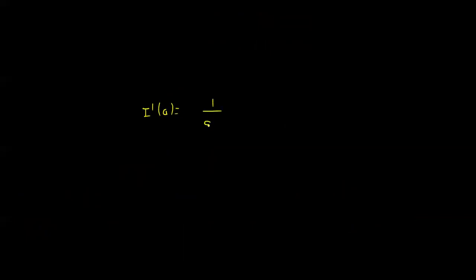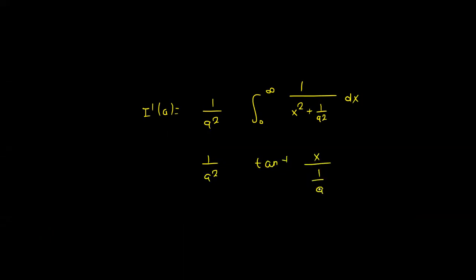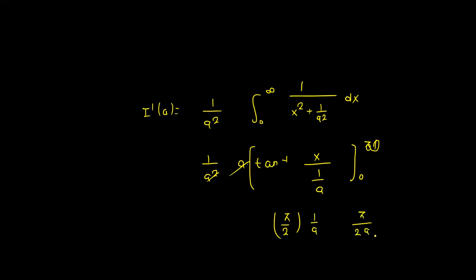This becomes the integral from 0 to infinity of 1 divided by (x² + 1/a²) dx, which evaluates to tan inverse of x divided by (1/a). Putting in the limits from 0 to infinity, tan inverse of infinity gives π/2 and the lower limit gives 0, so I-prime of a equals π/(2a).